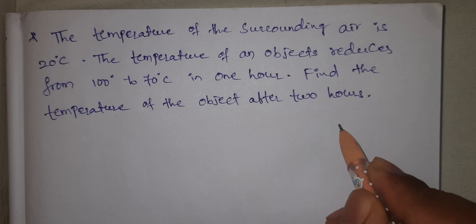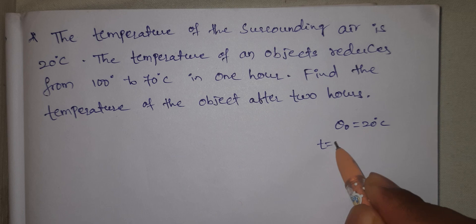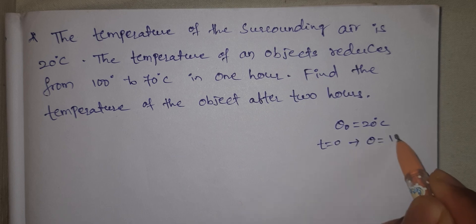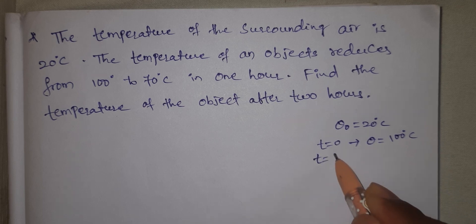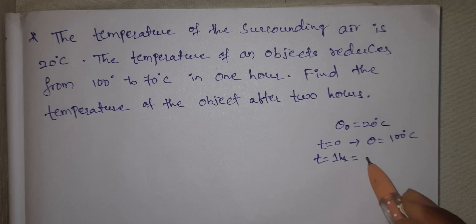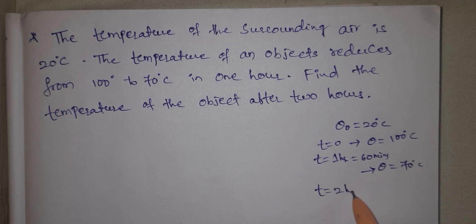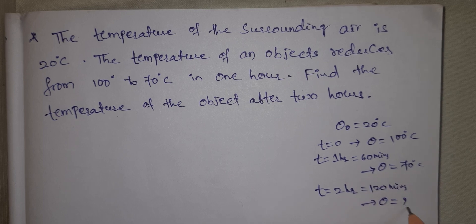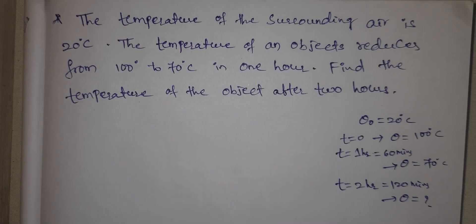The surrounding air temperature is θ₀ equal to 20 degrees Celsius. At starting time t equal to 0, the temperature of the object is 100 degrees Celsius. Next, at t equal to 1 hour, we will convert to 60 minutes. The temperature of the object is 70 degrees Celsius.